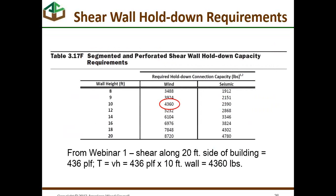A companion table shows what the shear wall hold-down capacity has to be for various wall heights for wind and seismic requirements. From webinar one, where we had shear along a 20-foot side of the building, that shear was 436 pounds per linear foot. For a wall that's 10 feet high, it requires a hold-down of 4,360 pounds. Table 3.17F gives you the shear wall hold-down requirements.